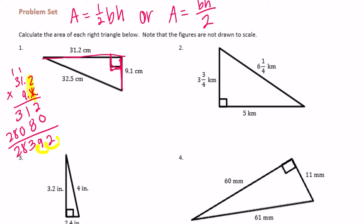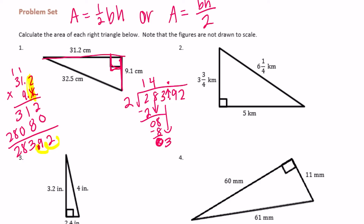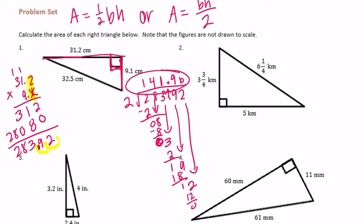We end up with 283.92. Now I need to divide that by 2. Bring the decimal point straight up. 2 goes into 2 once, bring down the 8 — 2 goes into 8 four times, bring down the 3 — 2 goes into 3 once, bring down the 9 — 2 goes into 19 nine times, bring down the 2 — 2 goes into 12 six times. We get 141.96, and our label is centimeters squared.